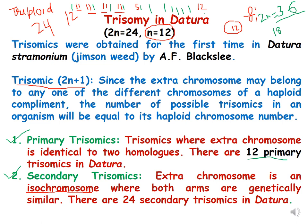Let us discuss the first example of aneuploidy in plants, which is trisomy in Datura. Trisomics are those organisms which have one extra chromosome, and we have already discussed in the previous lecture that they are represented by 2n plus 1.